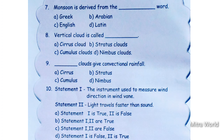Next, question 10: Statement 1 — the instrument used to measure wind direction is wind vane. Statement 2 — light travels faster than sound. Children, here are two statements — which is true and which is false? Options: statement 1 is true and statement 2 is false; statement 1 is false and statement 2 is true; both false.